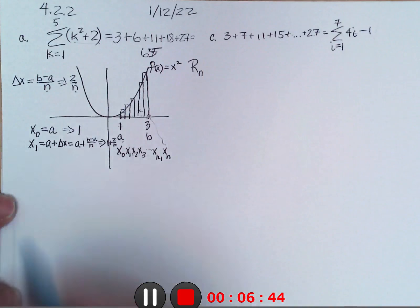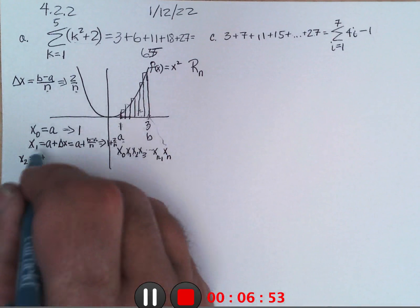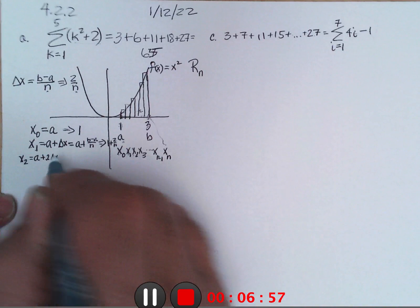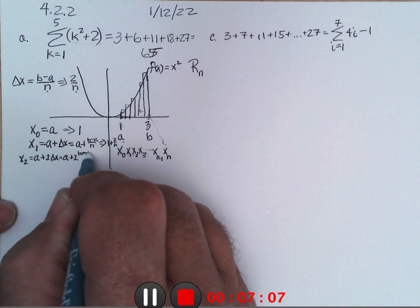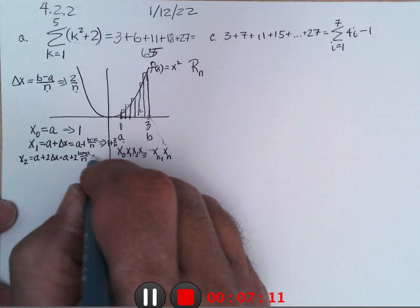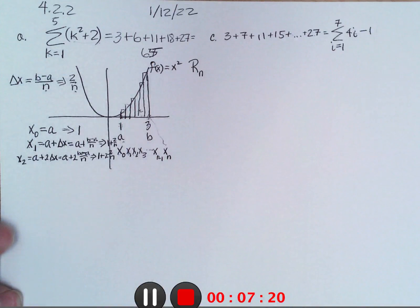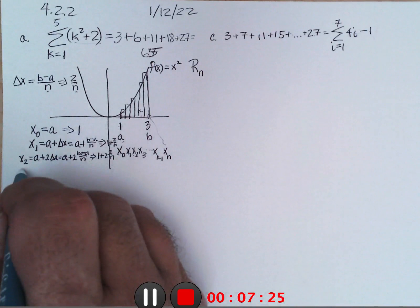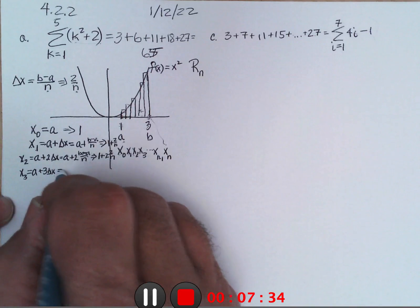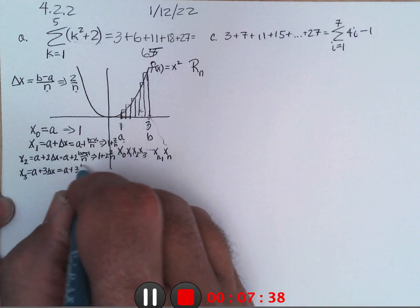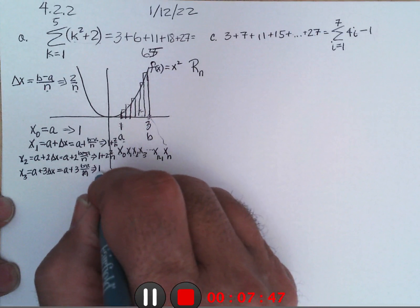So x1 would be a plus the width of a rectangle, or if you will, a plus b minus a over n, or in this particular case 1 plus 2 over n. And then x2 would be a plus 2 widths, or a plus 2 times b minus a over n, or in this particular case 1 plus 2 times 2 over n.